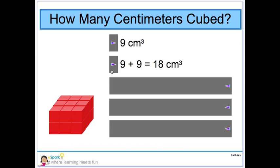The prism is 1 cm taller. We can also write an addition equation. 9 plus 9 equals 18 cm cubed. This prism measures 18 cubic units.